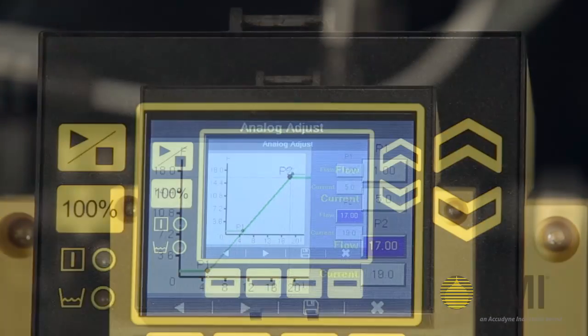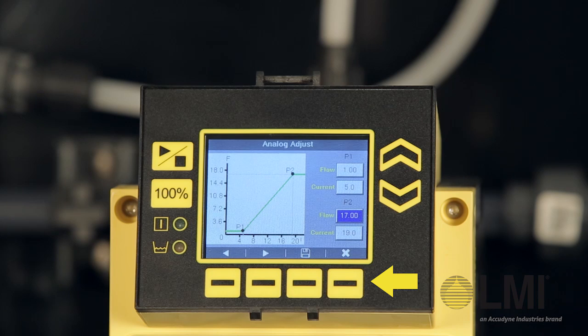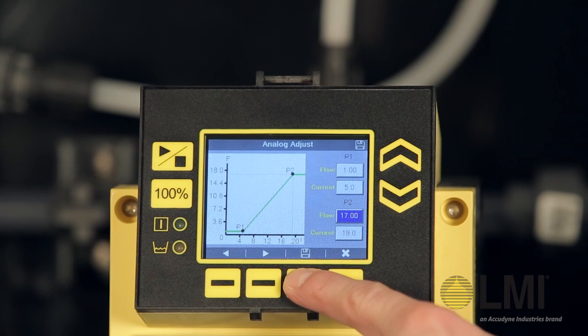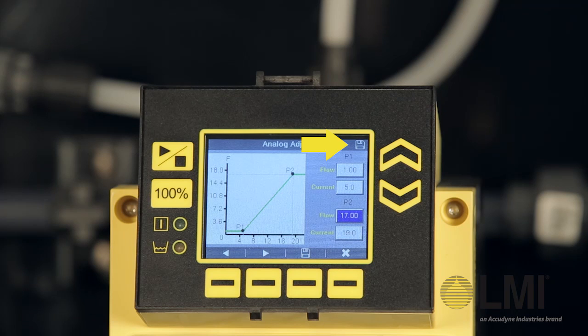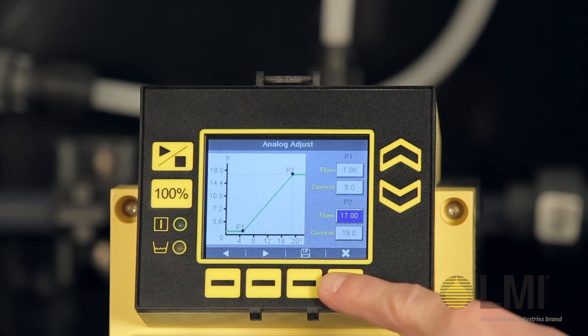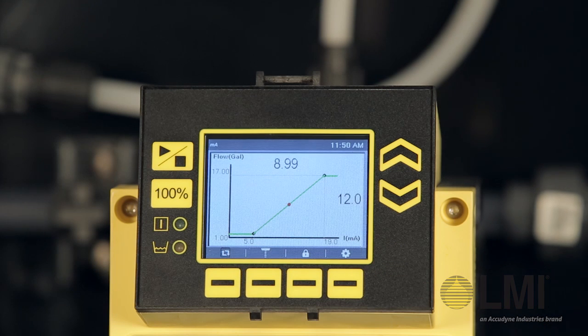From here, you can cancel the settings by pressing the context-sensitive menu button for exit without saving, or save the settings by pressing the context-sensitive menu button for the save symbol. A confirmation save icon will appear in the notification bar. Then, press the exit button to return to the main display menu.